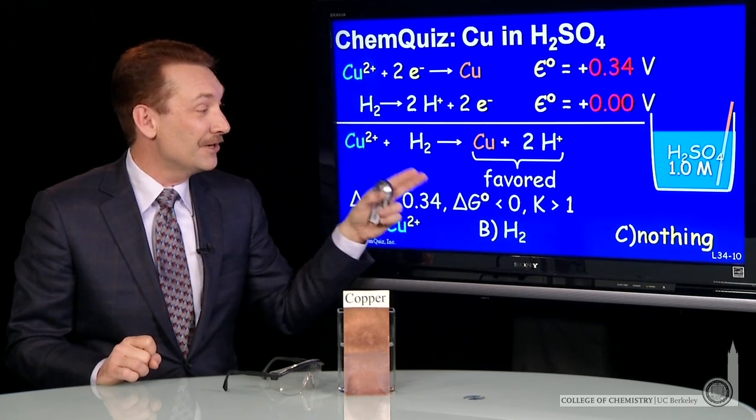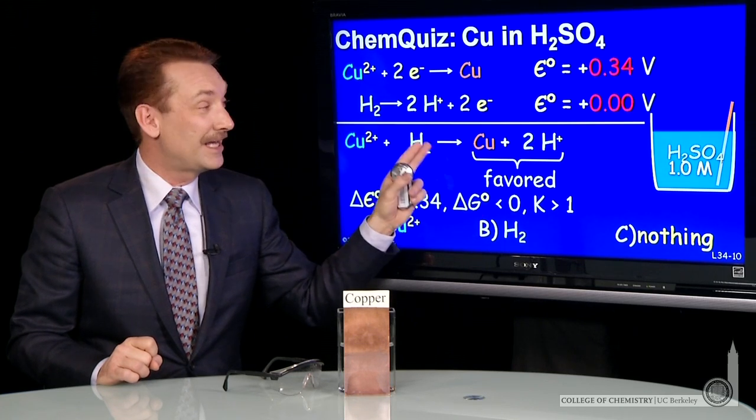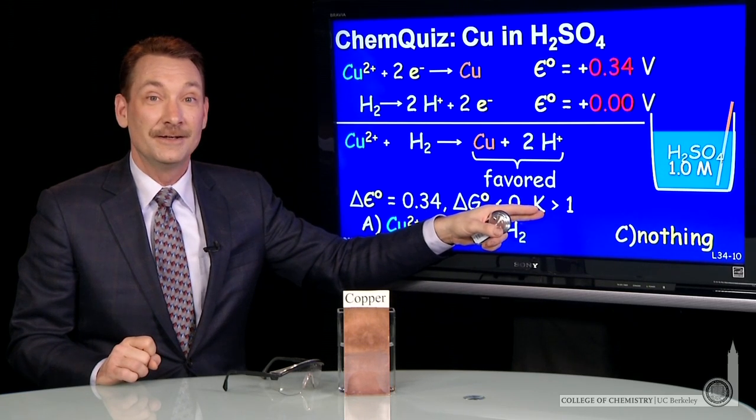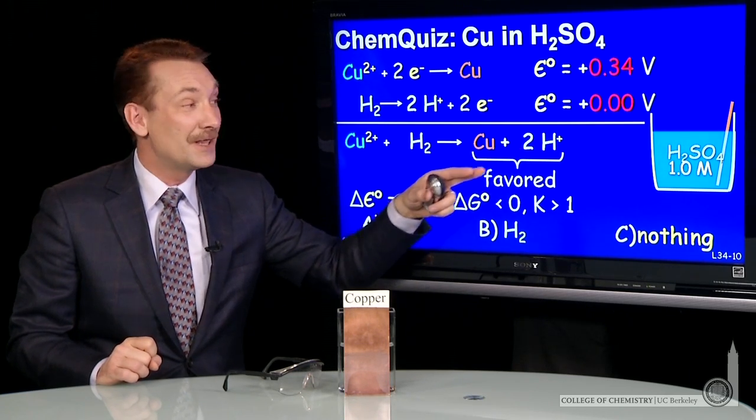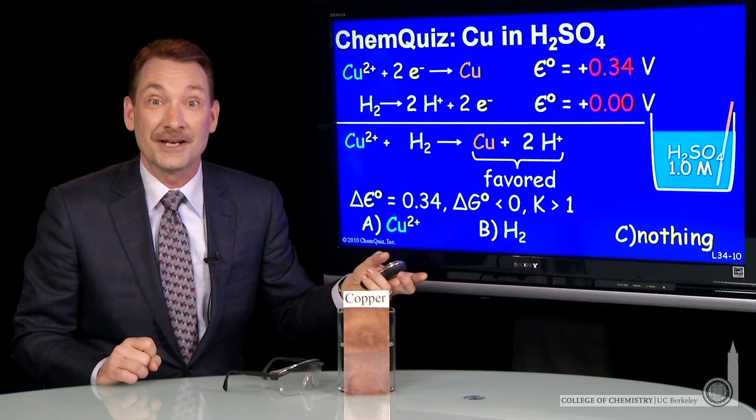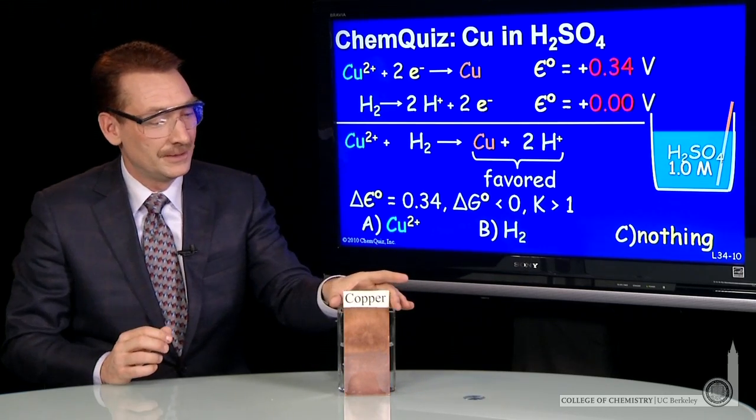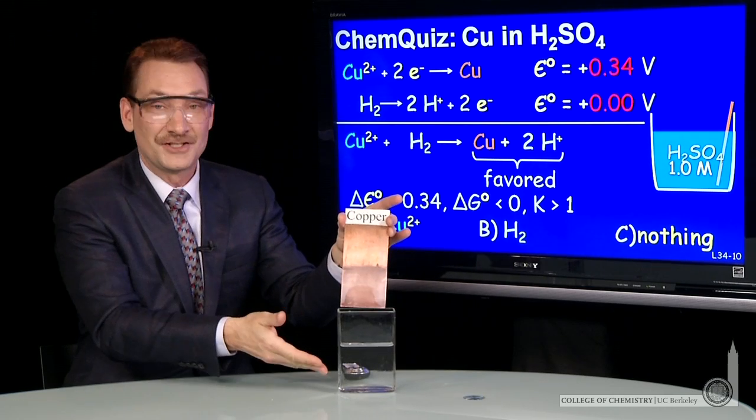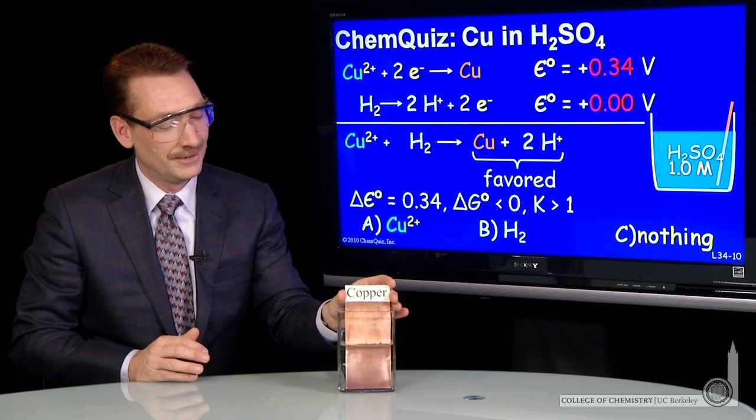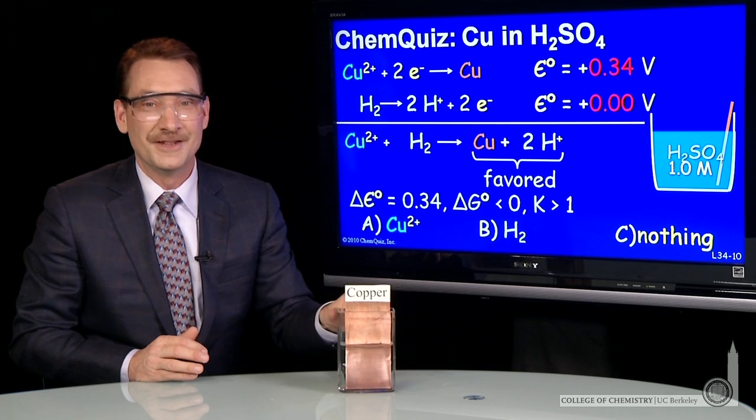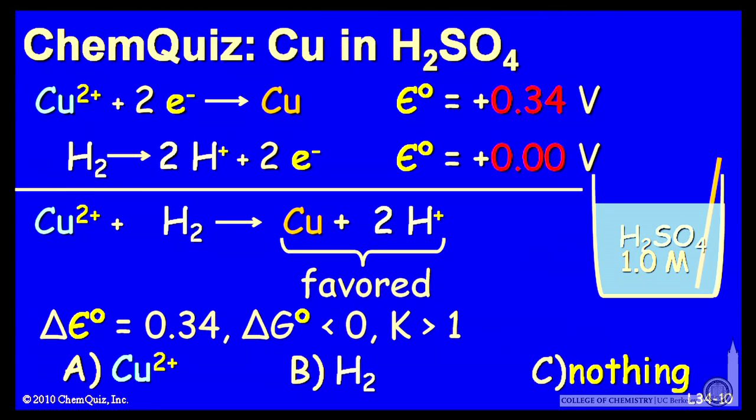The free energy difference here is negative. K is greater than 1. The products are favored. And the products are essentially where we started here. When you take copper metal, immerse it in sulfuric acid, 1 molar, there's no reaction. The correct answer here, nothing happens.